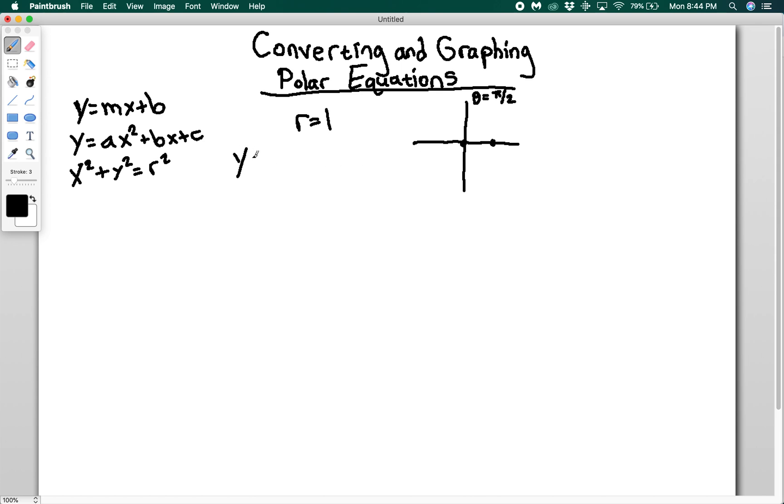For r equals 1, if I had y equals 1, what that would be is we'd say well y is equal to 1, then no matter what x I have I always have a height of 1. That makes sense because we have a grid on this plane. But on the polar axis we actually have circles, and those circles tell me the distance from the center.